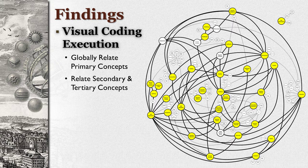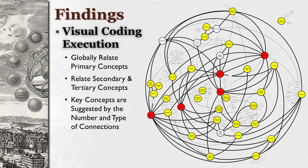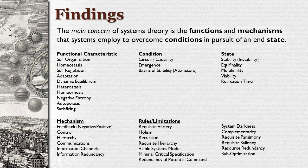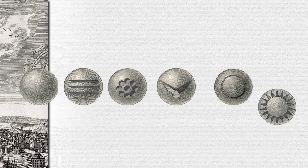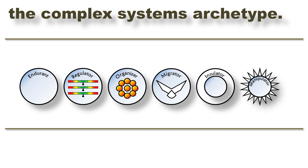This model allows us to examine the relationships quantitatively. Here, the key concepts are revealed — those having eight or more connections to other primary principles. By examining this collection of principles and grouping them into related categories, we arrive at the goal of the grounded theory study: what Helen Scott called an explanation of the main concern of the substantive area. For this study, the main concern of system theory is the functions and mechanisms that systems employ to overcome conditions in pursuit of an end state. Using this thesis as a starting point, it follows that a collection of complex system archetypes should exist that represent how systems interact with the environment, cope with emergence and change, and remain viable. It should be noted that this is not the only vantage point from which this data can be viewed, and other archetypes might be generated from other perspectives.